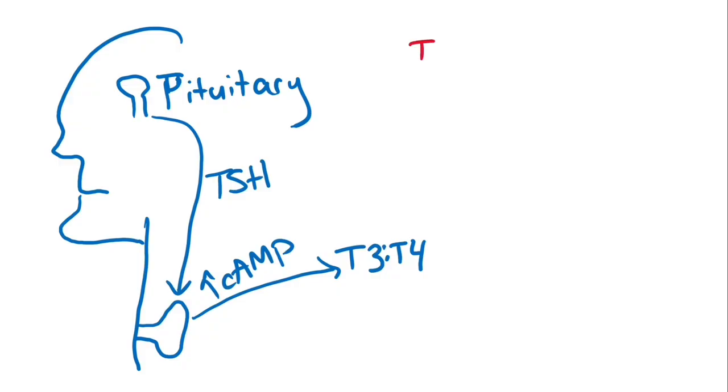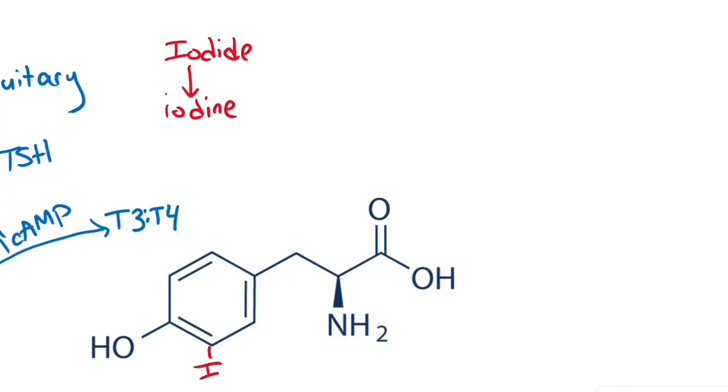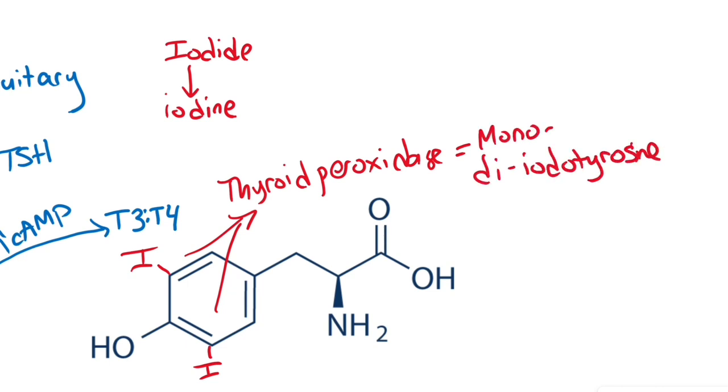Iodide is oxidized to iodine, then iodine is coupled with tyrosine via thyroid peroxidase to form mono or diiodotyrosine. Diiodotyrosine and or monoiodotyrosine combine to make T4 or T3.